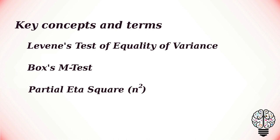Partial Eta Square shows how much variance is explained by the independent variable; it is used as the effect size for the MANOVA model. Post hoc tests are performed if there is a significant difference between groups, to determine where the significant differences lie — that is, which specific independent variable level significantly differs from another.